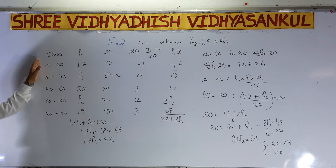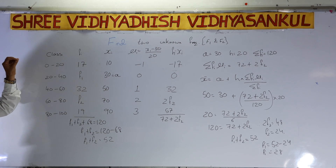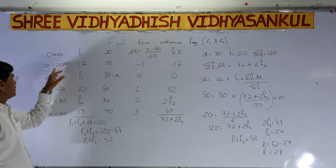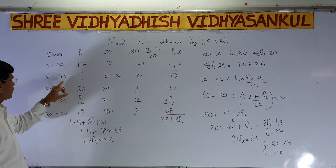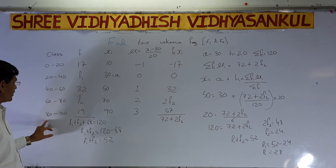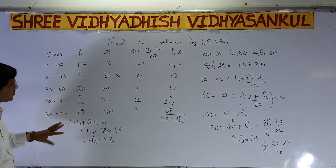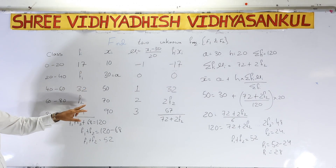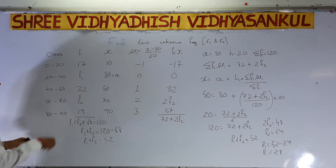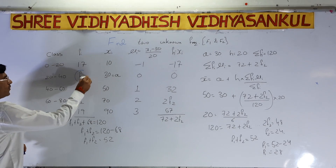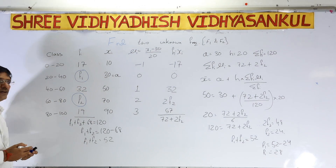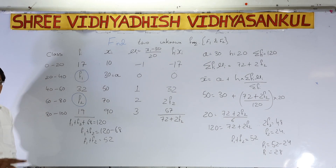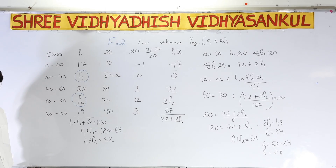First of all, we look at the class. Class and frequency are always given in a question. Classes are: 10–20, 20–40, 40–60, 60–80, and 80–100 — five classes are given. Frequencies are: 17, f1, 32, f2, and 19. So I have to find out these two unknown frequencies, f1 and f2.